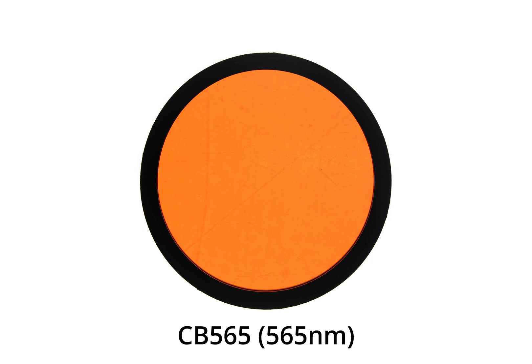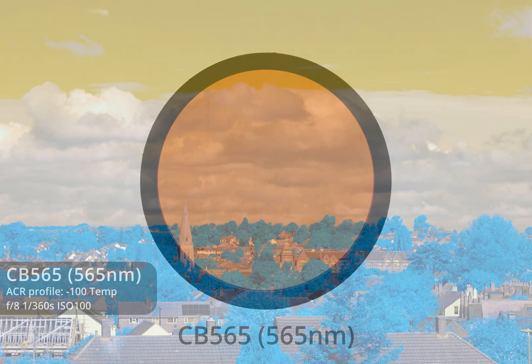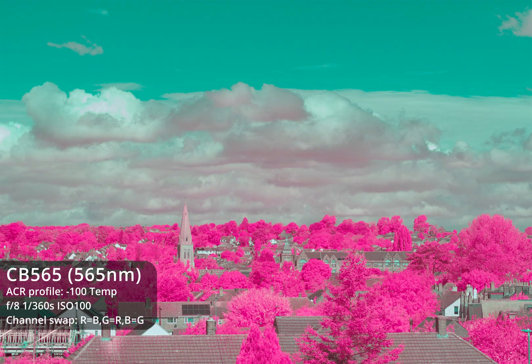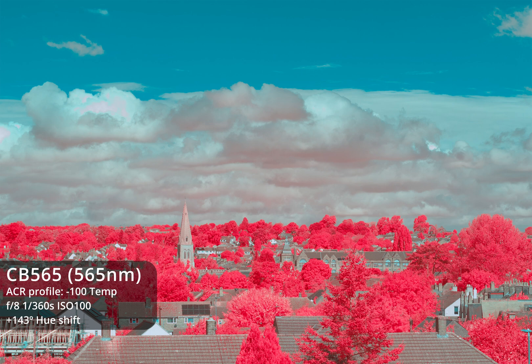The CB565 is an orange filter that passes light longer than 565nm, and other orange filters are likely to be pretty similar. With an EIR channel swap — where the blue channel goes to red output, red goes to green output, and green goes to blue output — we get purple-pink foliage and a teal sky, equivalent to a 119-degree hue shift. Alternatively a 143-degree hue shift gives red foliage and a blue sky with an aerochrome-style effect.